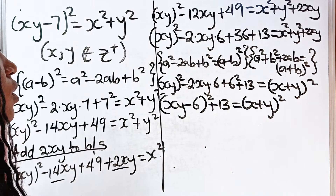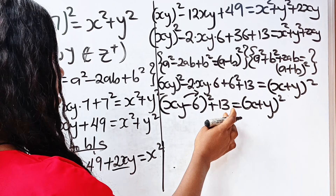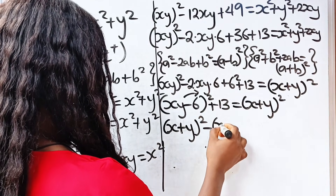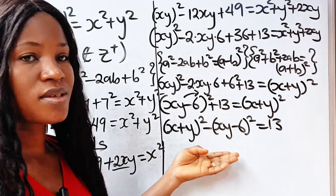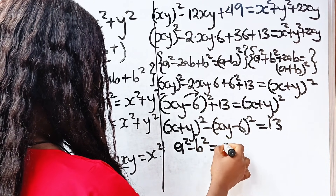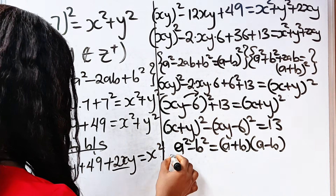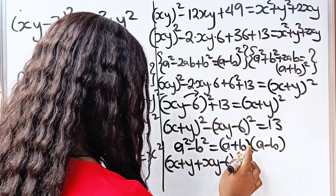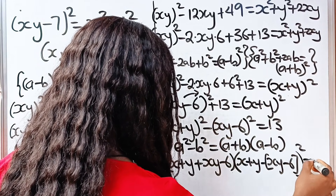If we transfer (xy - 6)² to the other side, we are left with 13. So (x + y)² - (xy - 6)² = 13. We can see that we have a difference of two squares here. Remember that a² - b² = (a + b)(a - b). Therefore, we can write this as: (x + y + xy - 6) multiplied by (x + y - xy + 6) is equal to 13.